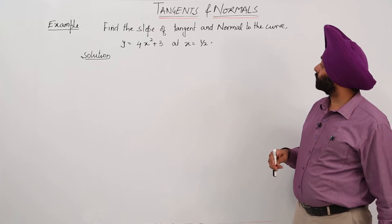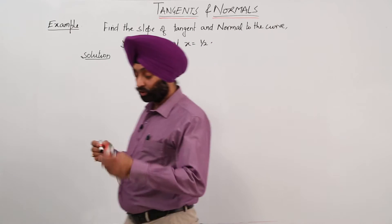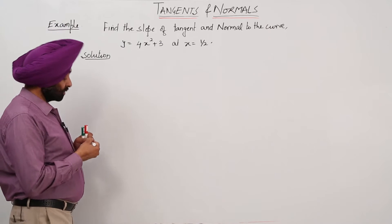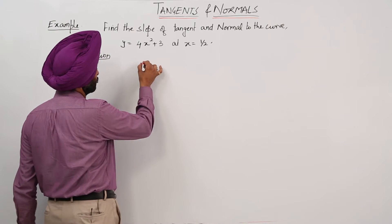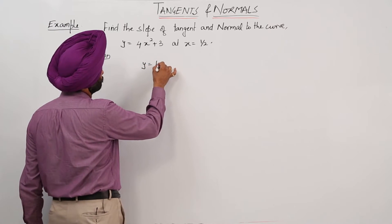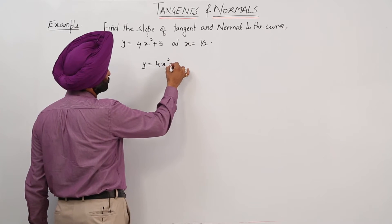Example to find the slope of tangent and normal to the curve. The equation of a curve is given to us: y equals 4x squared plus 3.